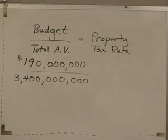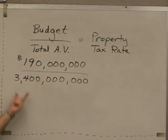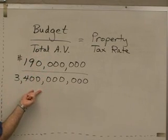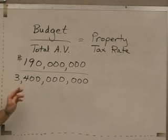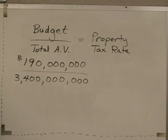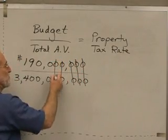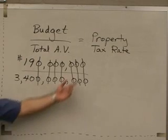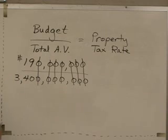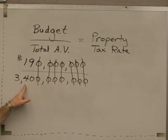Our budget is $190 million a year that we have to raise, and here's how much total assessed value there is if you add up everybody's property. We're going to divide the top number by the bottom. Even if these numbers were smaller, it's still a good idea to reduce that fraction before you punch it in, because when you punch in a bunch of zeros it's easy to punch too many or too few. So knock as many zeros off the numerator and denominator as you can. That leaves us with 19 divided by 340.